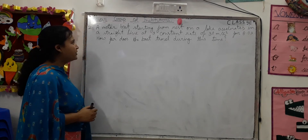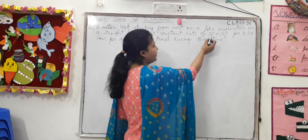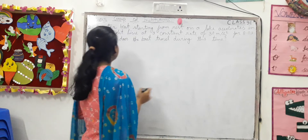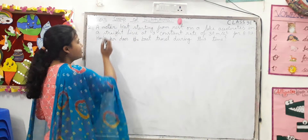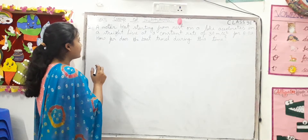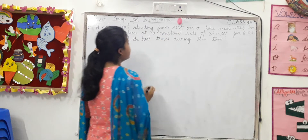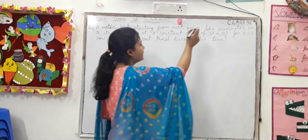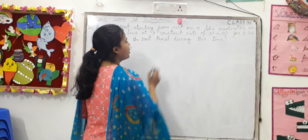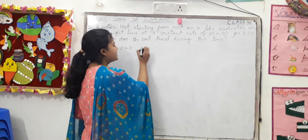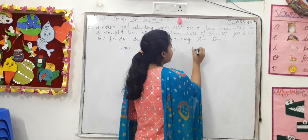Our next question is: A motorboat, starting from rest on a lake, accelerates in a straight line at a constant rate of 3.0 meters per second squared for 8.0 seconds. How far does the boat travel during this time? In this question, the boat starts from rest, so initial velocity u = 0. Acceleration a = 3 m/s², and time t = 8 seconds.